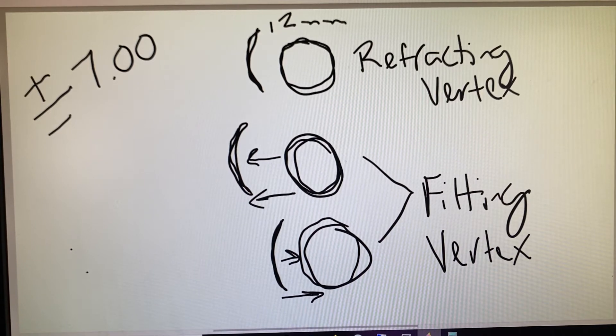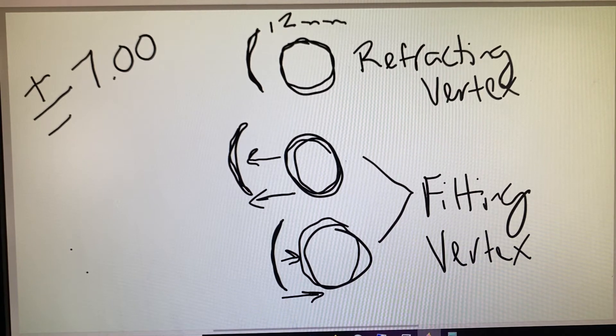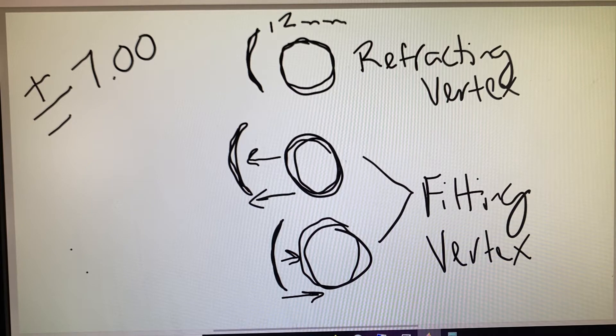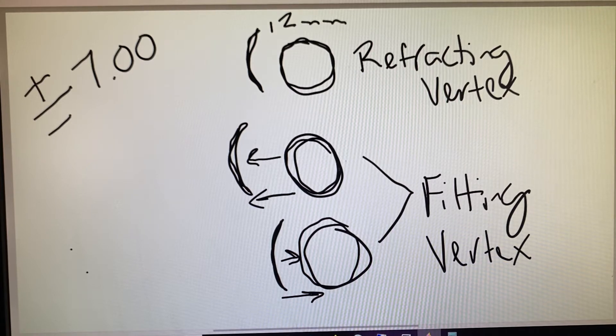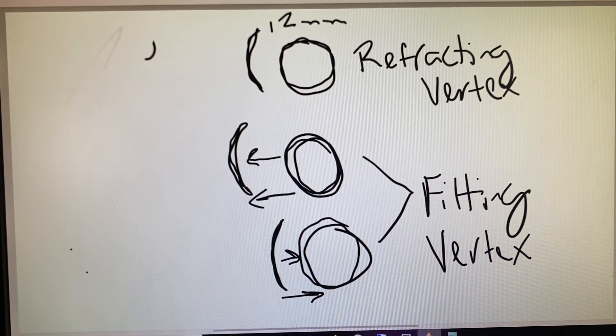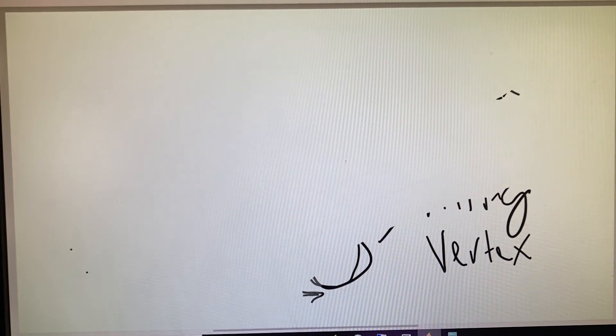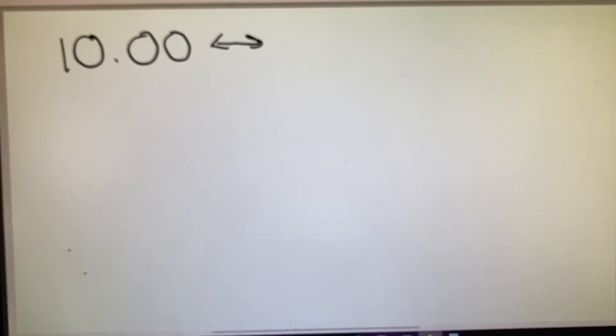So there's really two important things to hold on to here. There's a rule of thumb, and the rule of thumb basically says that if our patient has a power of 10 and the glasses were to move either in or out, right, reduce the vertex or increase it by 5 millimeters.